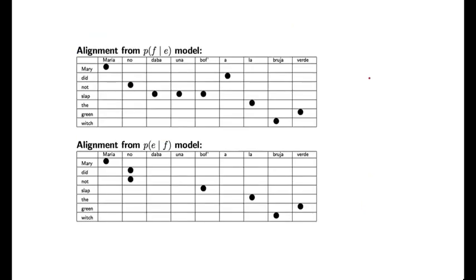So here is the sentence pair we've seen earlier — the Spanish sentence and the English sentence. So F in this case is Spanish, this is the foreign string, and E is English. And this is the alignment I showed you earlier derived from an IBM model 2 of F given E. Notice that this satisfies the constraint that each foreign word is aligned to a single English word — there's a single point in each of these columns specifying the alignment for each of the foreign words.